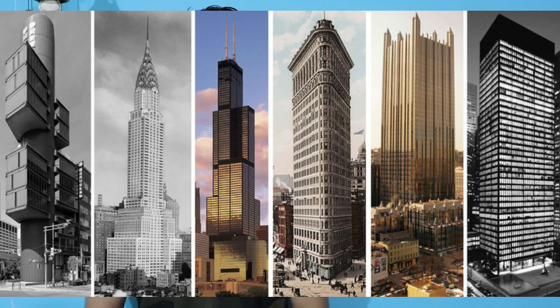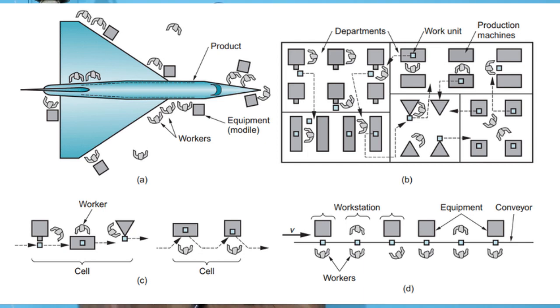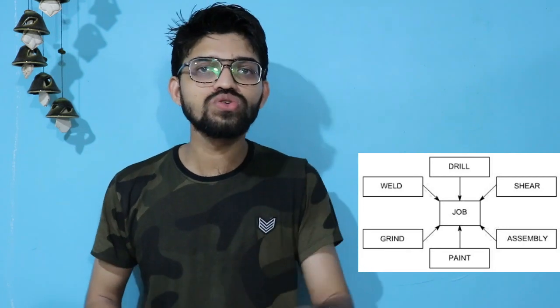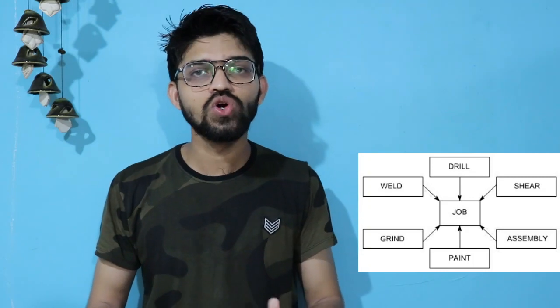The previous layouts are suitable for small jobs that can be transported from one location to another. But for heavy jobs — such as aircraft manufacturing, boat manufacturing, heavy boiler manufacturing, and construction — the end product cannot be transported from one location to another. In such cases, you need to adopt the fixed position layout. In this layout, the product remains at one location and all the resources are brought to that particular location where all the processing is carried out.